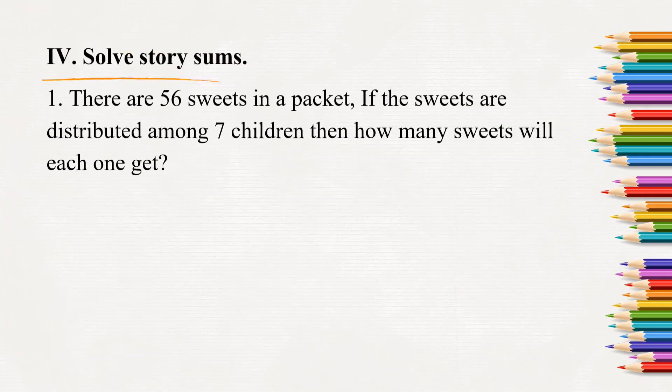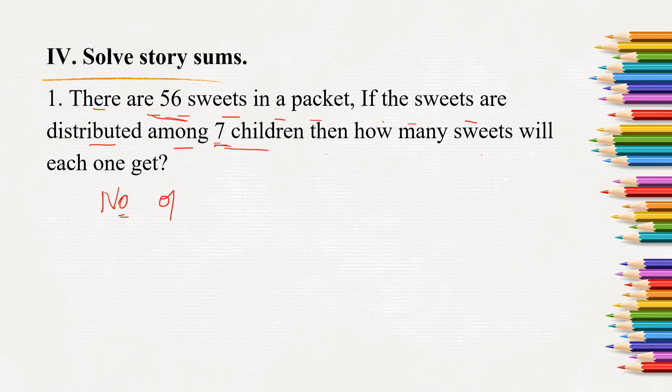Here we need to solve the given story sum. It is a statement sum. So we will have to read the question, understand the given statement, and then solve. There are 56 sweets in a packet. If the sweets are distributed among 7 children, then how many sweets will each one get? 56 sweets are there which has to be distributed among 7. Distributed is nothing but divided. So we can say we will have to divide 56 sweets among 7 children. So how many sweets will each one get will be able to find out.